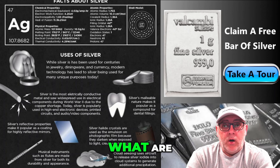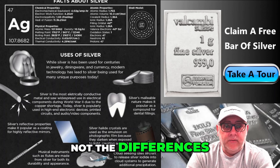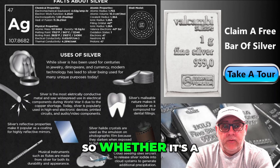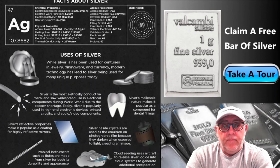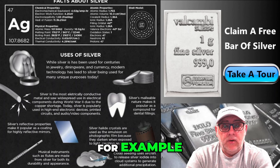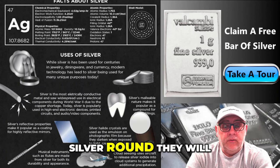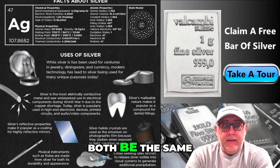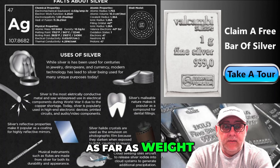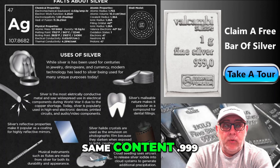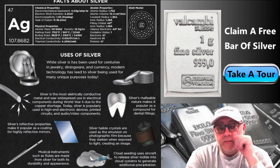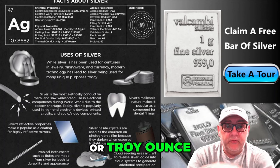Let's start with what's the same. Whether it's a silver round or a silver coin, take one ounce for example — a one-ounce coin and a one-ounce silver round will both be the same as far as weight and silver content: 0.999 fine silver. That would all be the same.